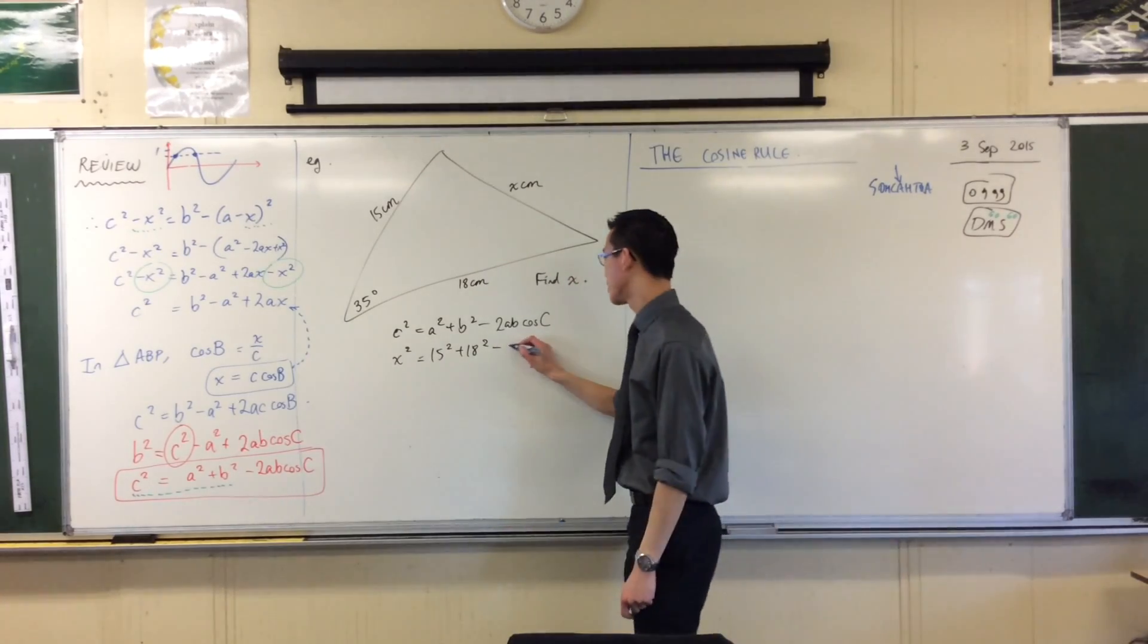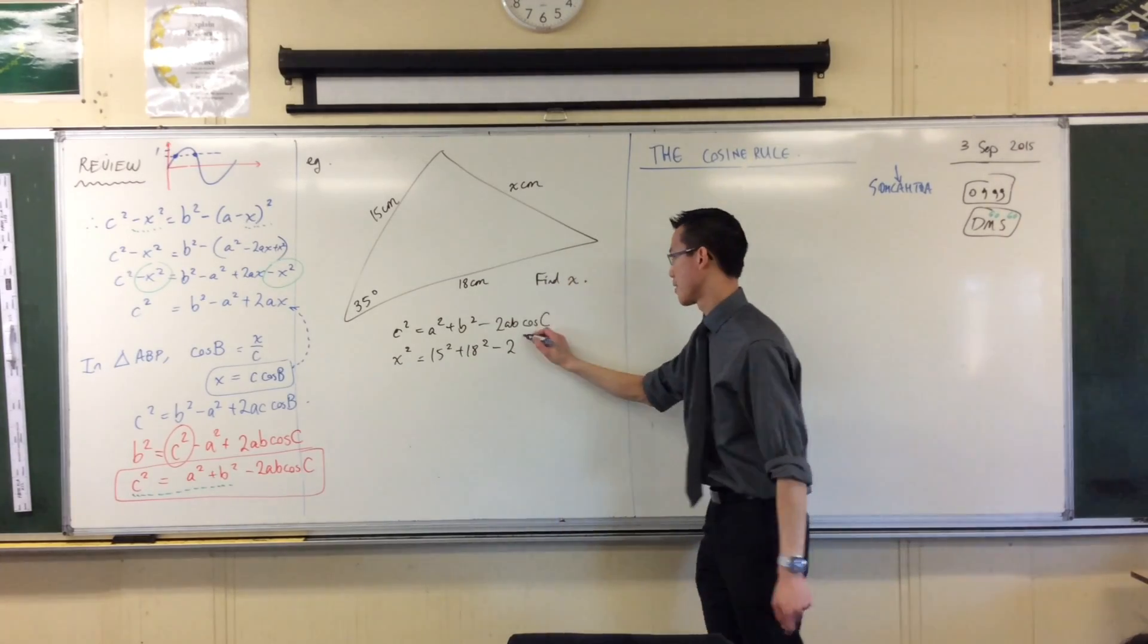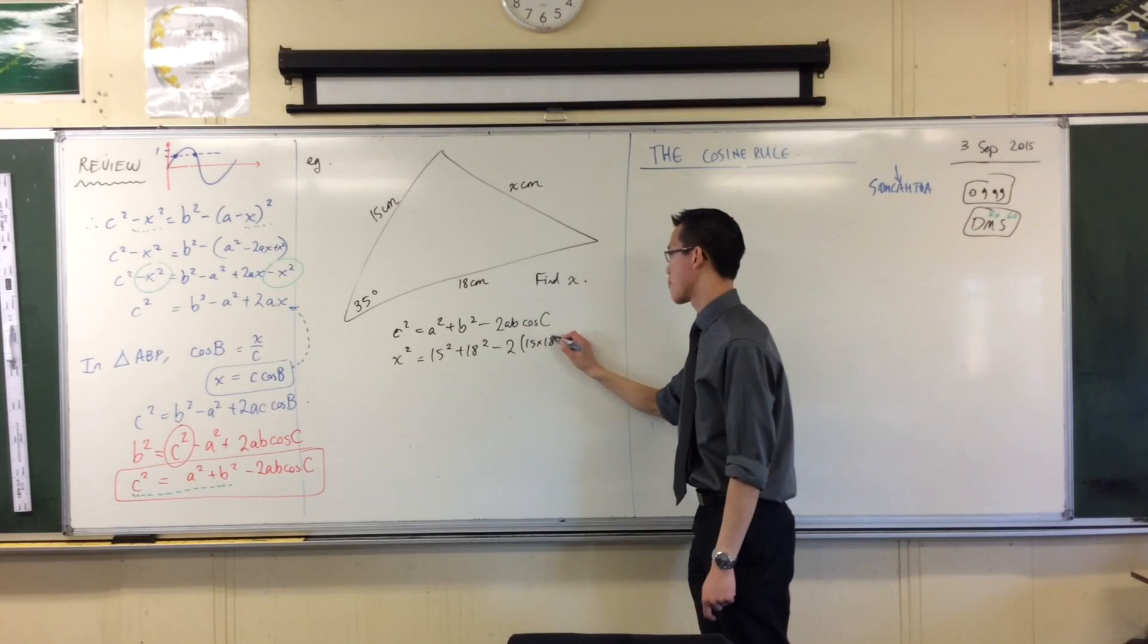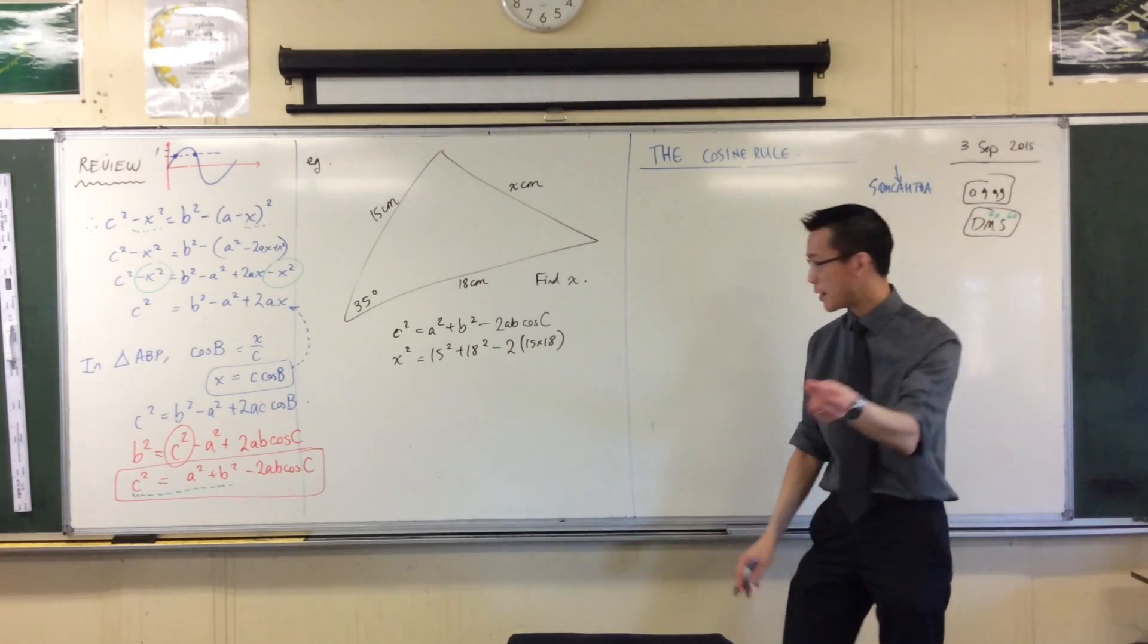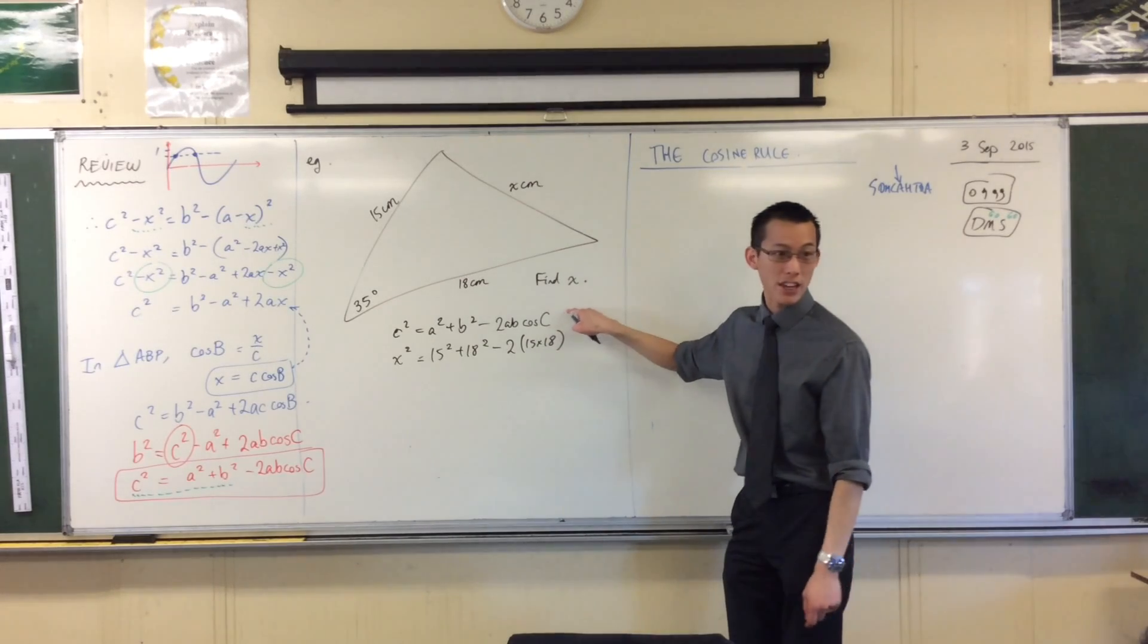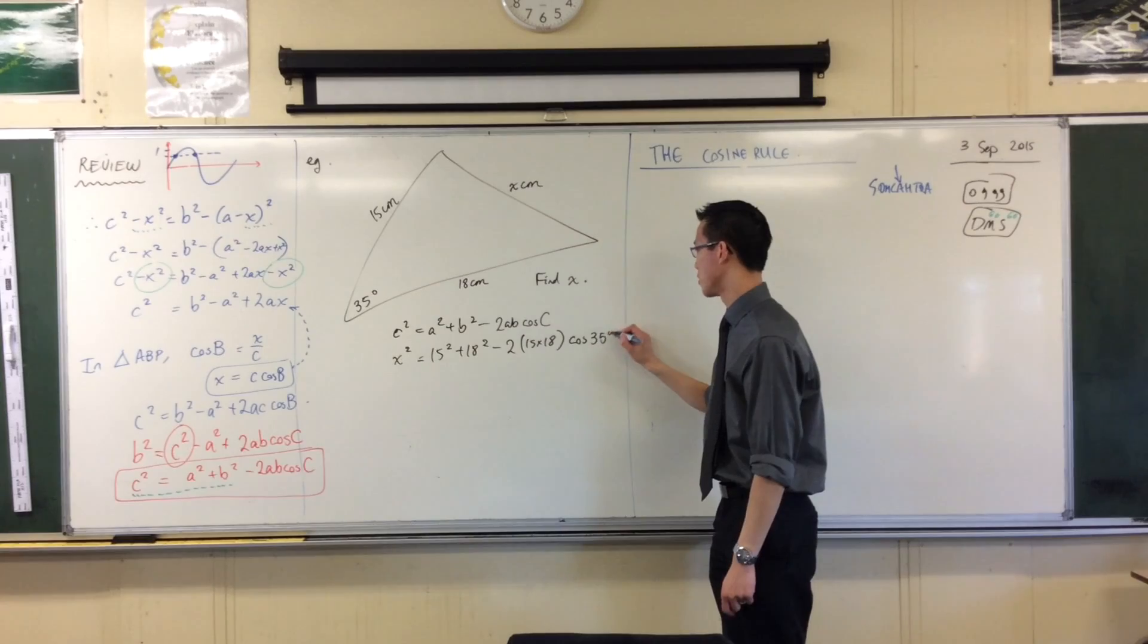Then I take away two lots of, I go back to those sides again and I take their products. I multiply them, 15 times 18. And my final piece is this angle hanging on over here. Cos 35 degrees.